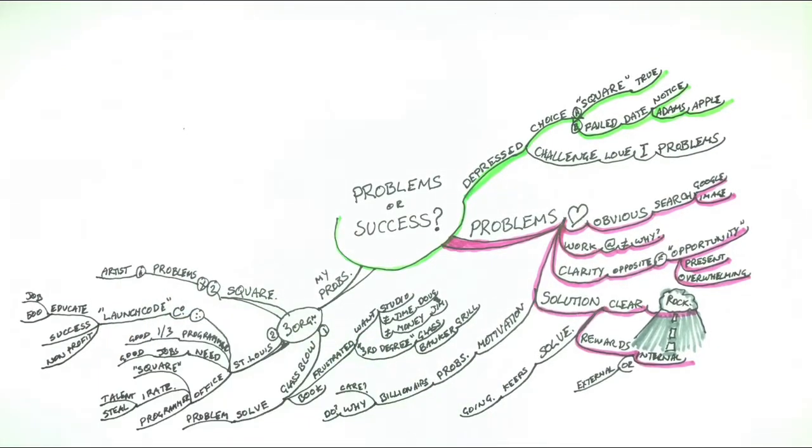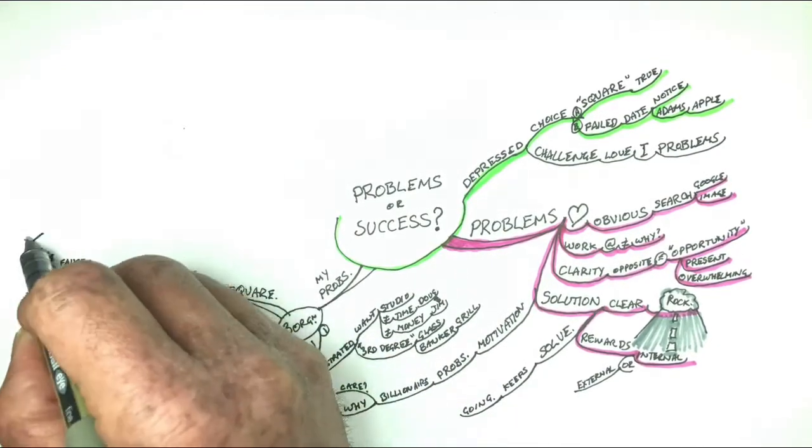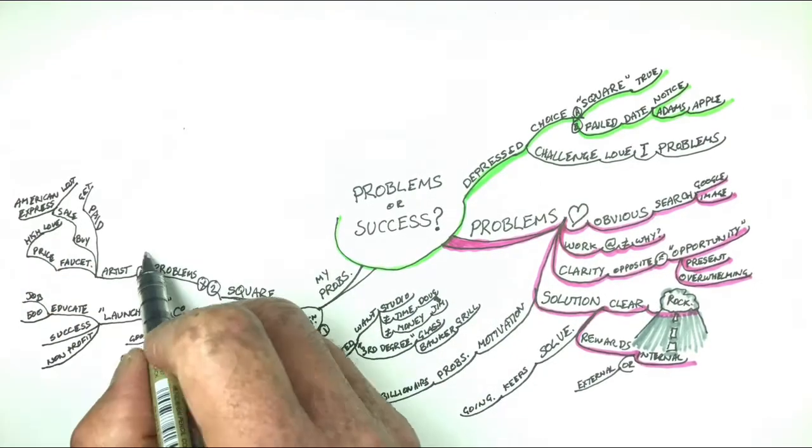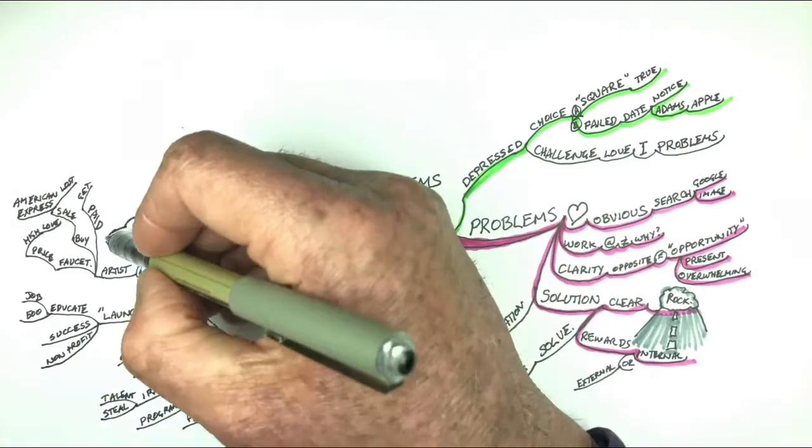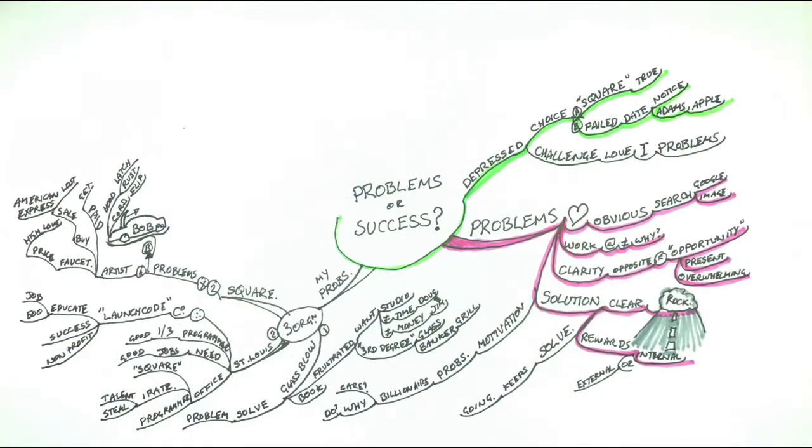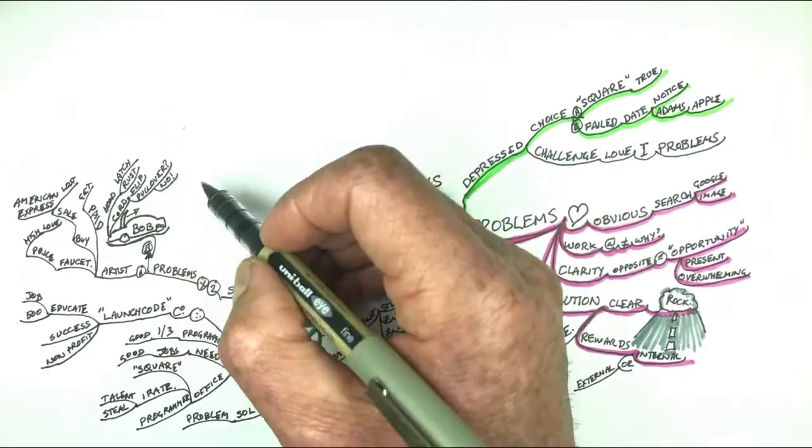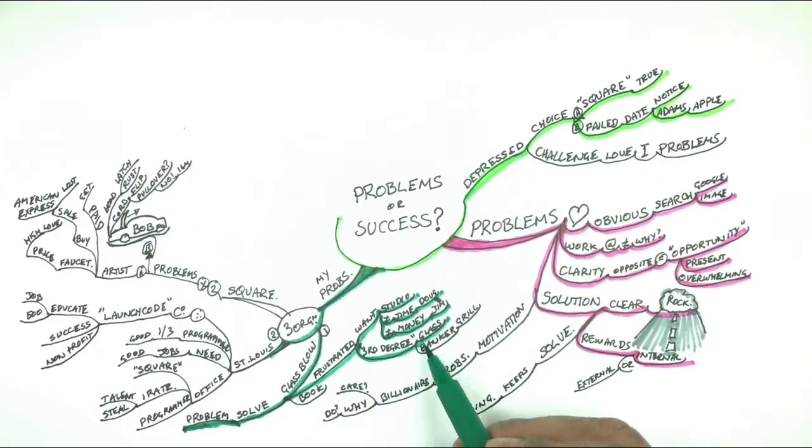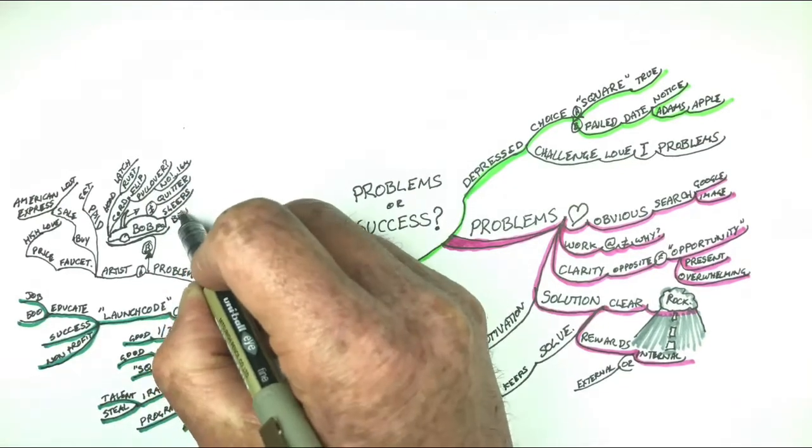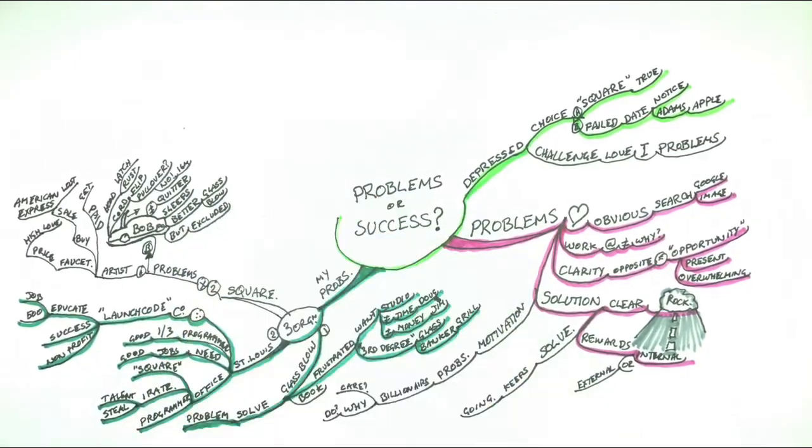And then Square, his third problem, was that as an artist he lost out on sales because he didn't have American Express access. His friend Bob ended up living in his car, even though he was a better glassblower, because he couldn't take some of the payments for his work. And so they created Square as a solution to those problems.